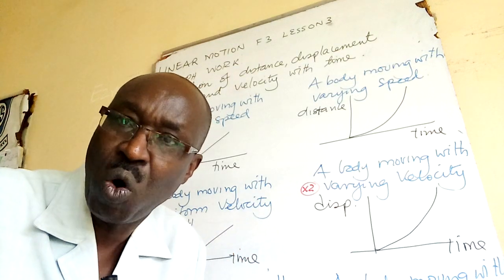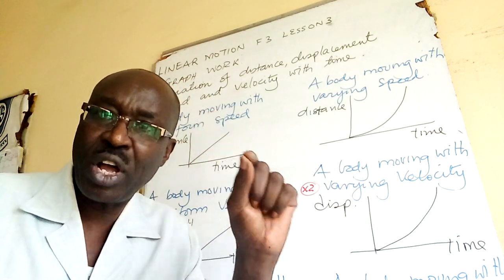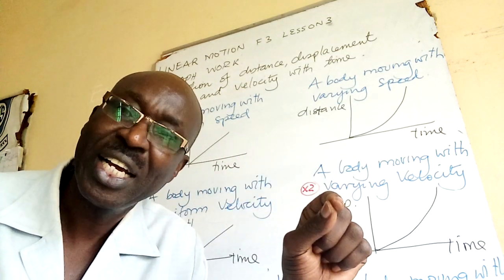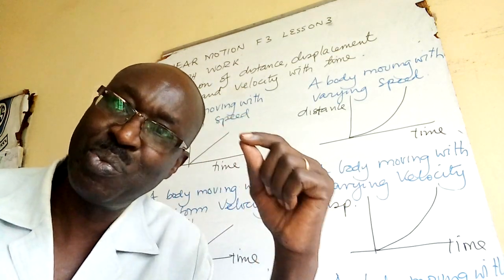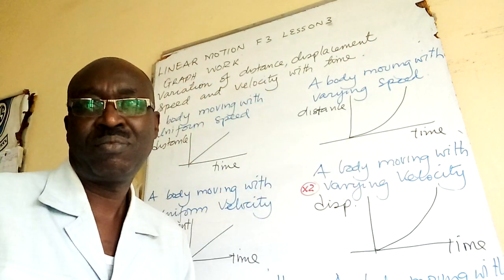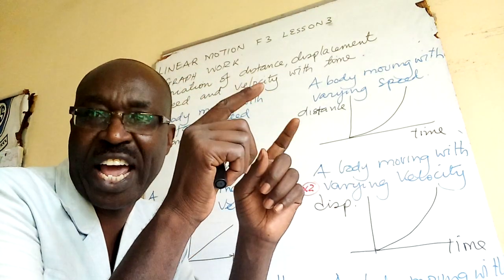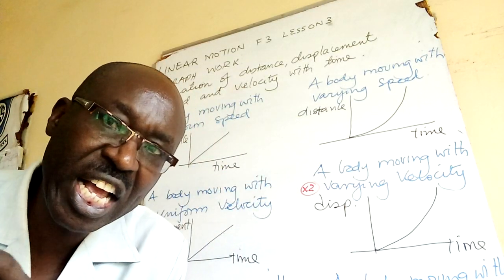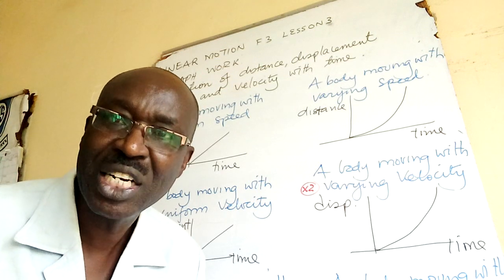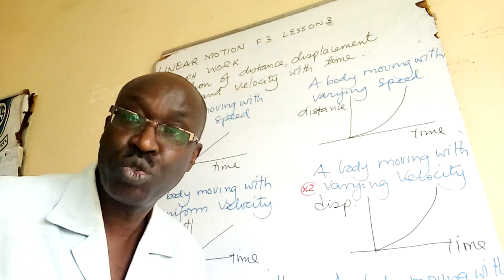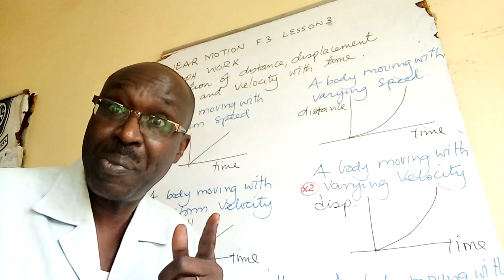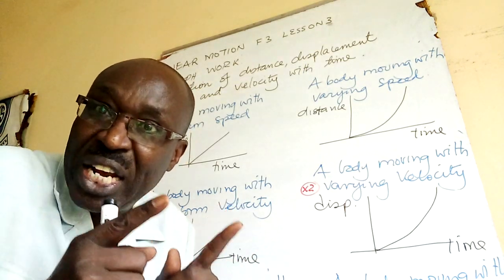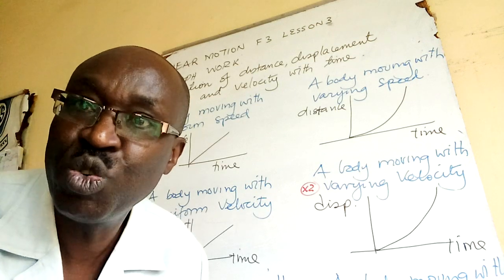The quantity 'A' is not necessarily distance — it can be displacement, speed, or velocity. In general: equal A in equal time interval, because we are reading what happens to distance, displacement, velocity, and speed when the time changes uniformly.